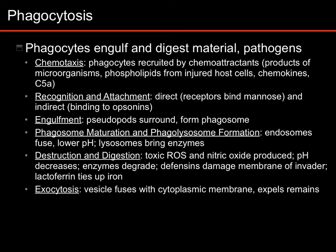Other types of phagocytes bind indirectly through opsonins. These might be things like C3B from the complement system or a number of antibodies. Basically, these are little things that stick to the cells and that phagocytes can grab hold of and use to eat. Even though things that can bind directly often will bind even better if there are opsonins present.